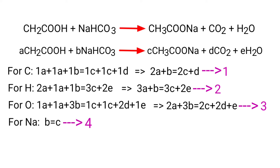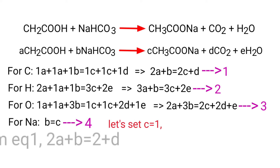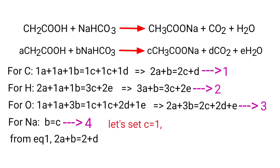Now you can solve the 4 simultaneous equations. It looks almost impossible, but we know that the coefficients must be integers. Let's set C equal to 1. Then from Equation 1: 2A plus B equals 2 plus D.